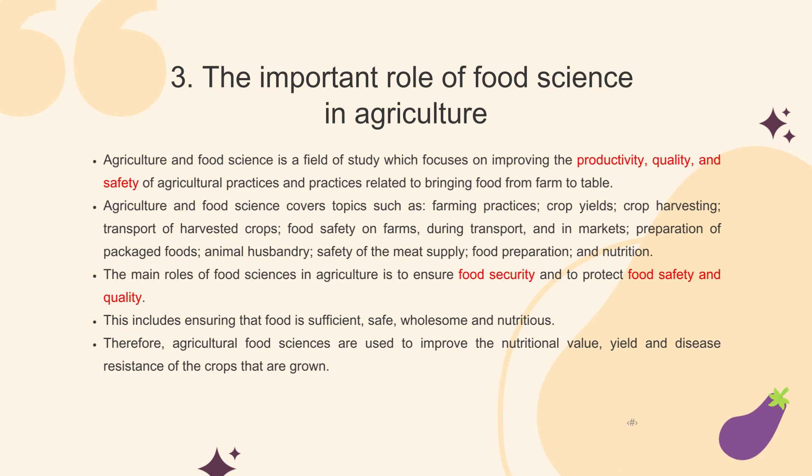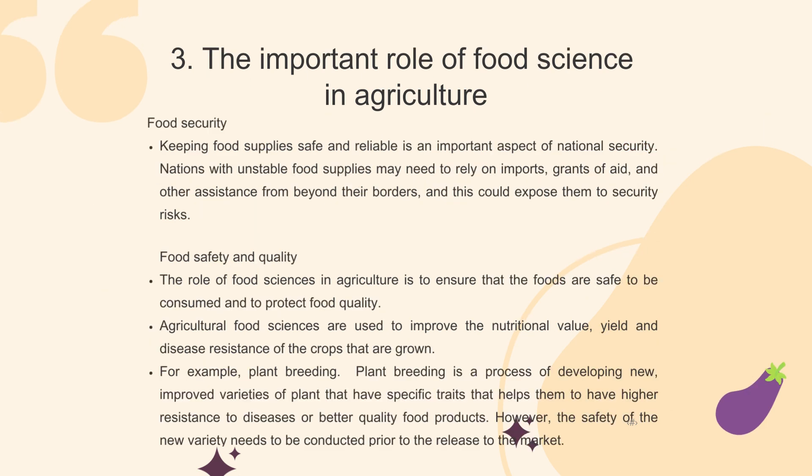This includes ensuring that food is sufficient, safe, wholesome and nutritious. Agricultural food sciences are used to improve the nutritional value, yield and disease resistance of crops. Under food security, keeping food supplies safe and reliable is an important aspect of national security. Nations with unstable food supplies may need to rely on imports, grants of aid, and other assistance, which could expose them to security risks. Under food safety and quality, food sciences ensure foods are safe to consume and protect food quality. For example, plant breeding is a process of developing new, improved plant varieties with specific traits for higher disease resistance or better quality food products; however, the safety of any new variety must be assessed prior to market release.